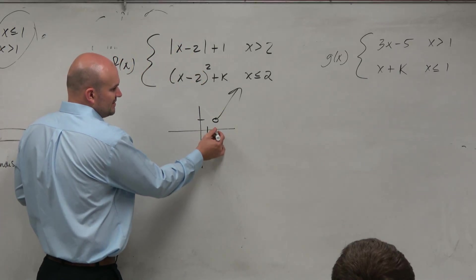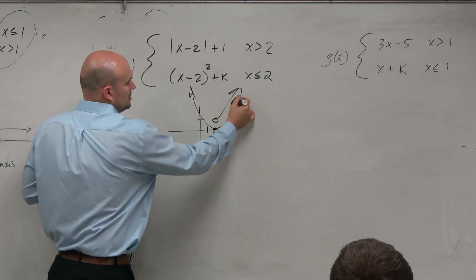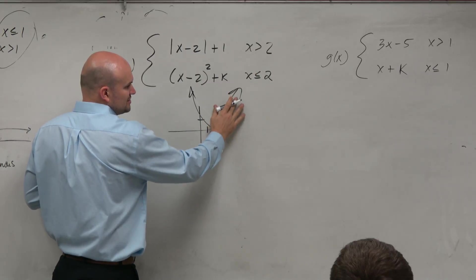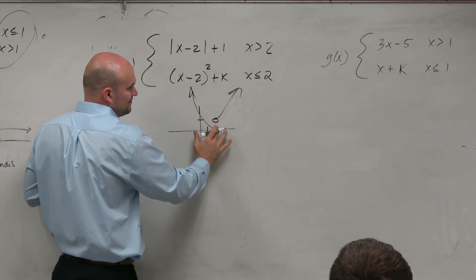So if k was 0, then this graph would look like this. But it's only for when it's less than or equal to 2, so we divide that there. OK.